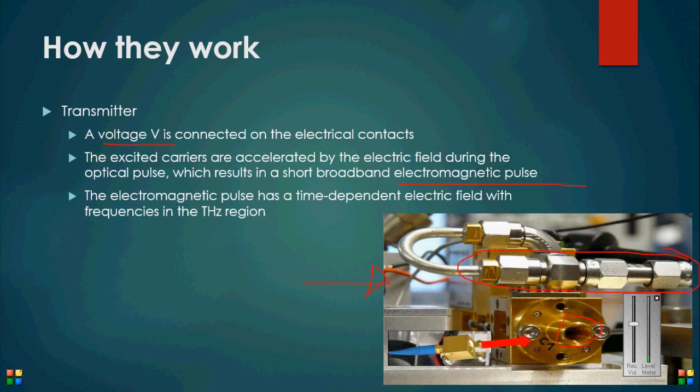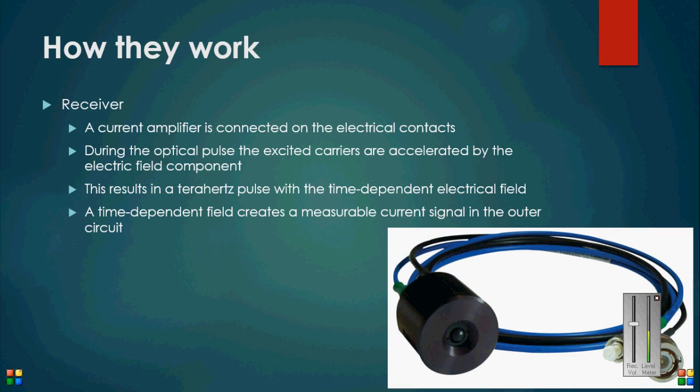As a receiver, the antenna works when a current amplifier is applied to the contacts, as opposed to a voltage which is used for a transmitter. When the time-dependent field hits the antenna, it creates a measurable, unique current proportional to the signal of the original source. This image here shows a common optical pulse sensor, which is used to receive a terahertz signal.